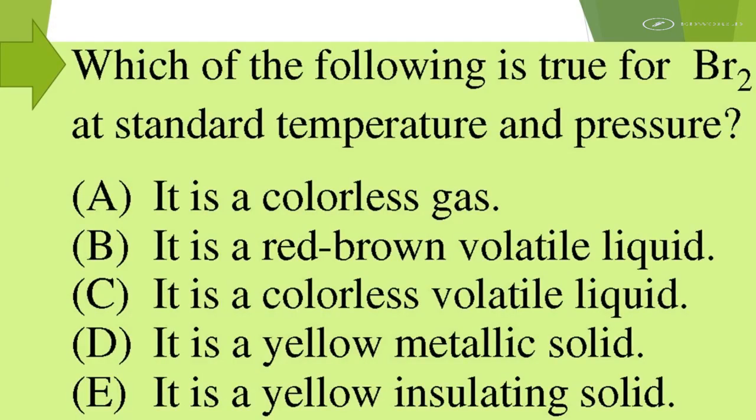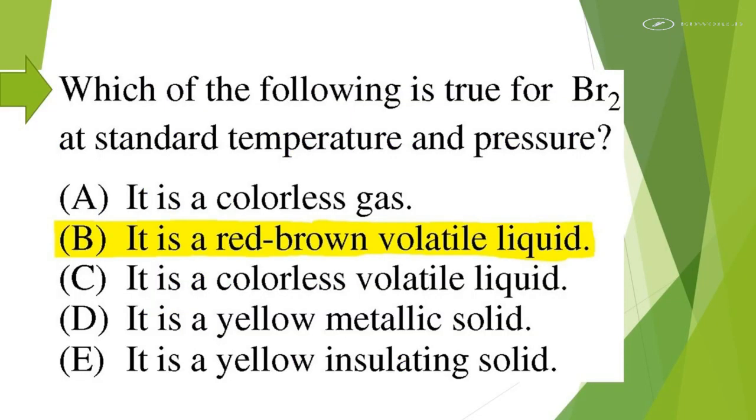Which of the following is true for bromine at standard temperature and pressure? A: It is a colorless gas. B: It is a red-brown volatile liquid. C: It is a colorless volatile liquid. D: It is a yellow metallic solid. E: It is a yellow insulating solid. Bromine at standard temperature and pressure is a red-brown volatile liquid.